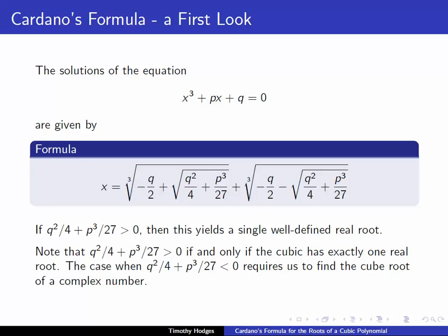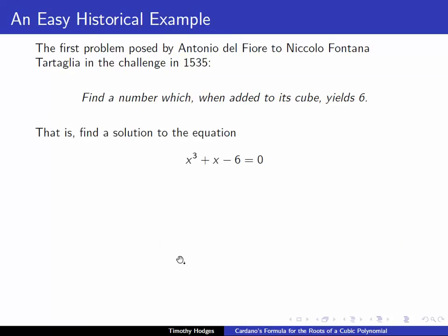Let's have a look at an example of this simple case, and it's a historic example. It's the first problem posed by Del Fiore to Tartaglia in the challenge in 1535. Fiore asked of Tartaglia to find a number which when added to its cube yields 6. In other words, a solution of the equation x cubed plus x minus 6 equals 0.